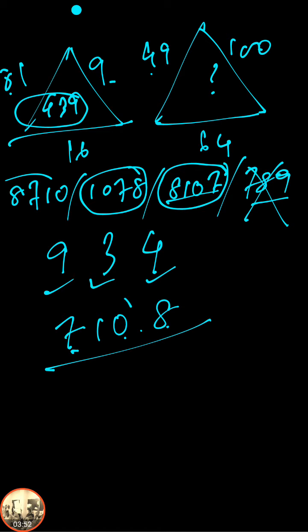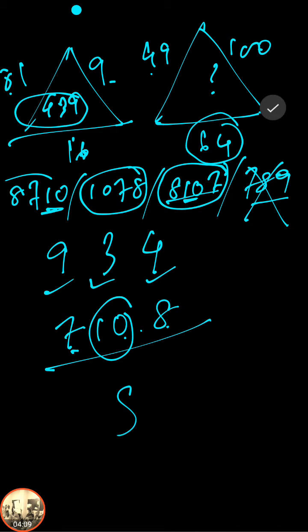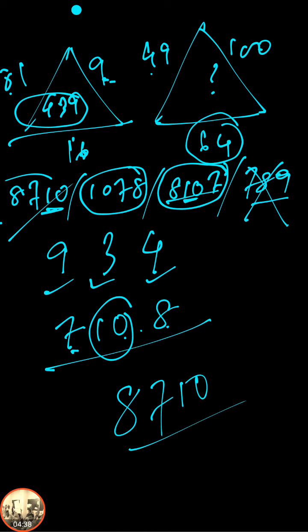To determine the correct arrangement of 7, 10, and 8 in the answer, observe the pattern: the bottom value comes first. So 8 comes first, then the remaining digits follow. 10 comes last. This gives the answer 8710, which matches one of the options. The answer is 8710.